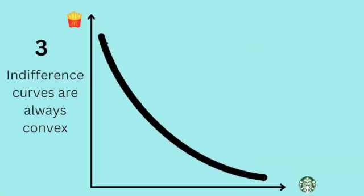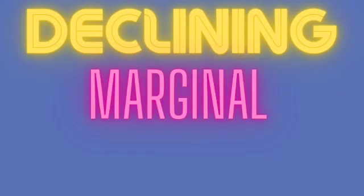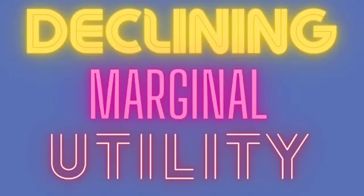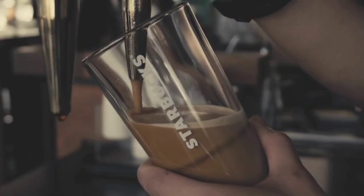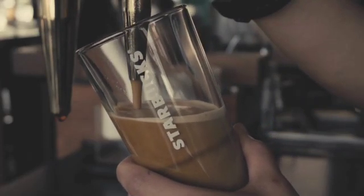Thirdly, note that the curve is convex—it bends inward. It's not straight or concave, bending outwards. That's because we are all assumed to have what economists call a declining marginal utility. The more we consume of something, the less pleasure we get from each individual item we consume. Our first visit to Starbucks may be great, but it's pretty fair to say that we get less pleasure from our thirtieth visit than we did from our first one.